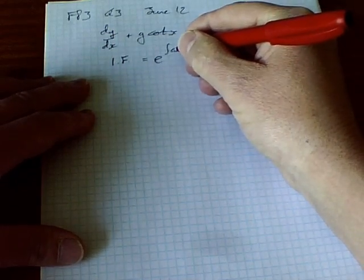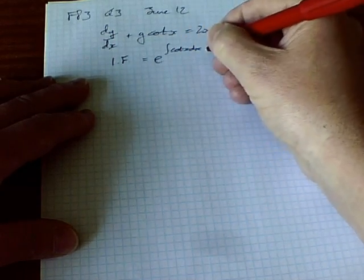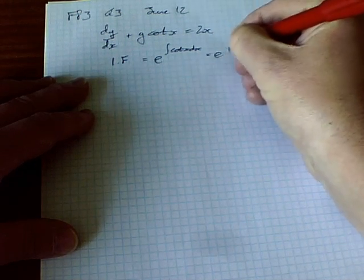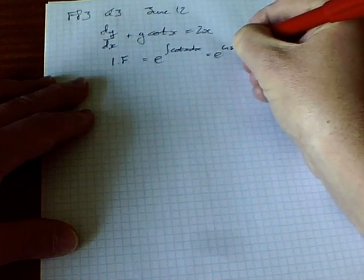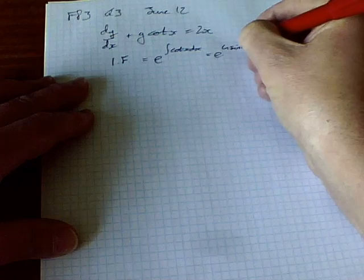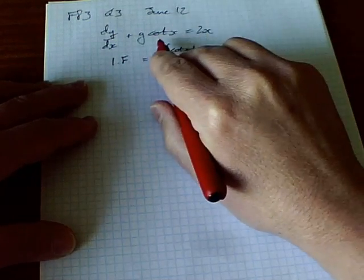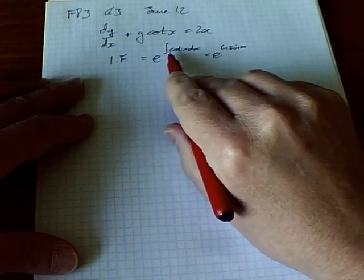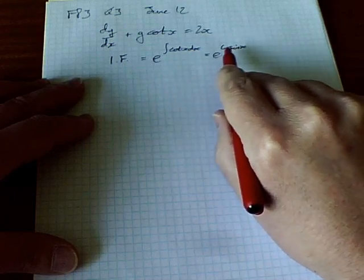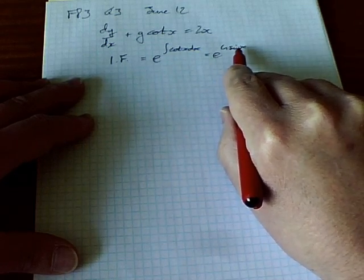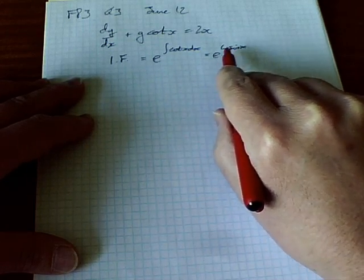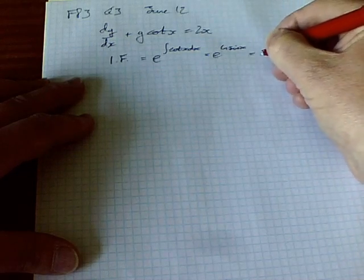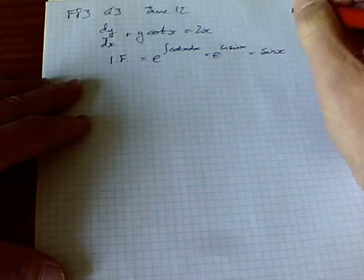If you look up in the green book, the integral of cot x is ln sin x. So that's e to the ln sin x. A lot of these questions are relatively contrived, and that integral of cot giving ln sin x means e to a natural log is just sin x.